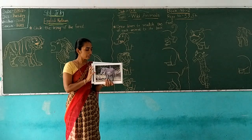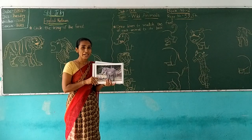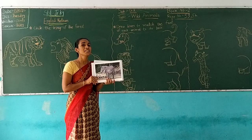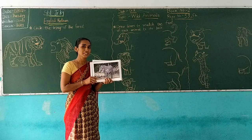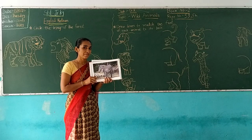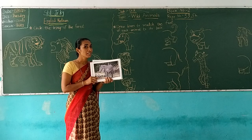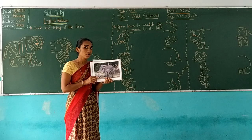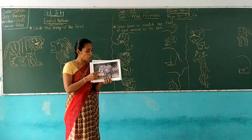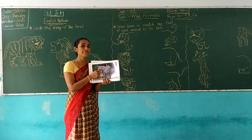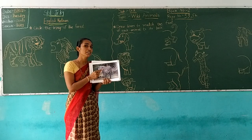And which animal is this? This is a zebra. Z for zebra. And you know friends, on a zebra's body there are black and white stripes.